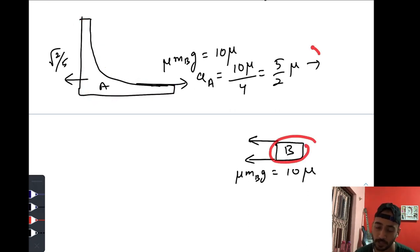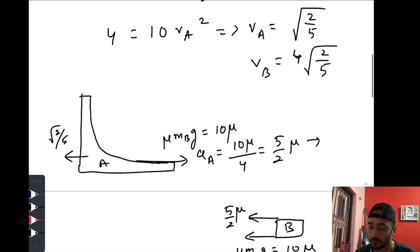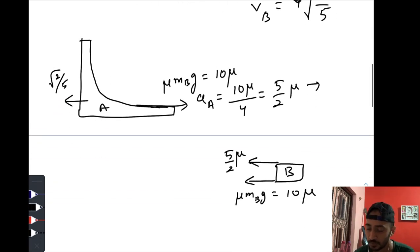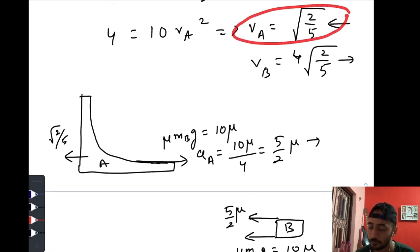Now with respect to the ground, as we have found out, velocity of block B is 4 root 2/5. But you are observing with respect to A, so at the initial position, this one is towards the right and this one is towards the left. So with respect to A, velocity of B at the beginning would be 5 root 2/5.